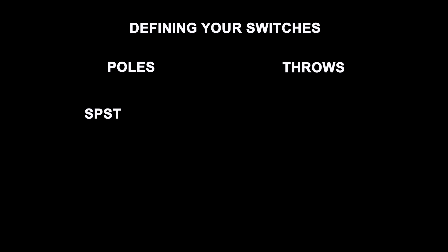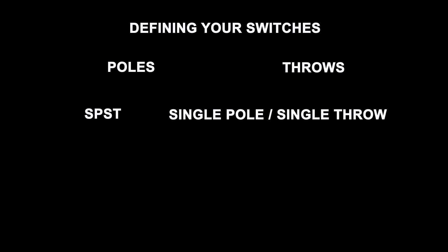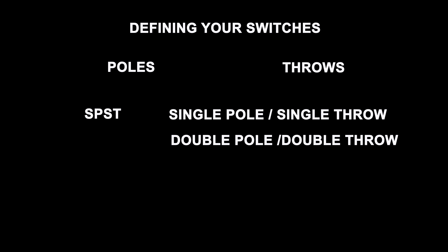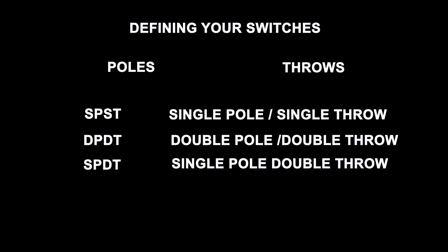We're going to start with how many contacts the switch has, and this is denoted by poles and throws. You can get SPSTs which are single pole single throw, double pole double throw which is the DPDT, single pole double throw which is SPDT, and so on. We're just going to go through a few of those and how they're used in electronic circuits.